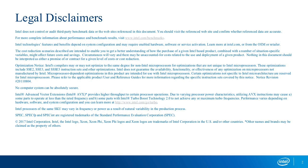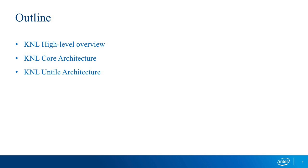What I'm going to cover: first, give you an idea of KNL as a processor — what features you can expect. Then we'll talk about the core architecture — the individual core and how they are connected on the processor die. Then the untile architecture: on Xeon processors we talk about core and uncore; for Knight's Landing we talk about tile and untile.